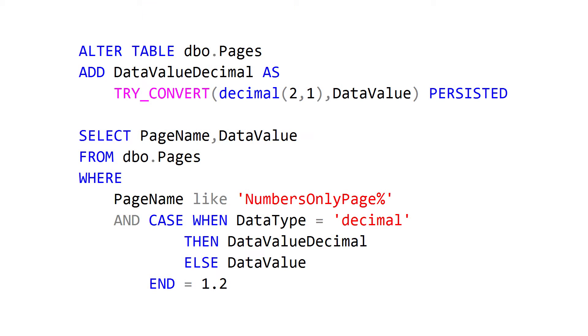Another option is to add one more column to the table — a persisted computed column that uses TRY_CONVERT to convert our data, whether numeric or string, to a decimal data type or whatever other type we choose. This gives us a defined decimal column we can query against, eliminating those implicit conversions. The downside is that we have to change a lot of our queries and logic — specifically, for string data types we look at the data value column, but for decimal data types we look at this new computed column. We get better performance and can add indexes, but at the cost of significant query changes.